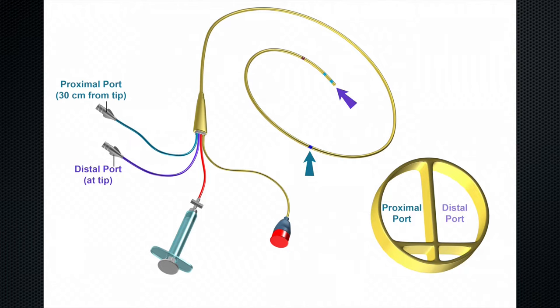The distal port opens at the distal tip of the catheter. This port is used to measure pulmonary artery pressure or to measure a true mixed venous saturation. The third port is used to inflate the balloon. The balloon sits approximately 2 cm from the distal tip of the catheter. Each pulmonary artery catheter comes with a 1.5 mL syringe. When air from the syringe is injected, the balloon inflates.